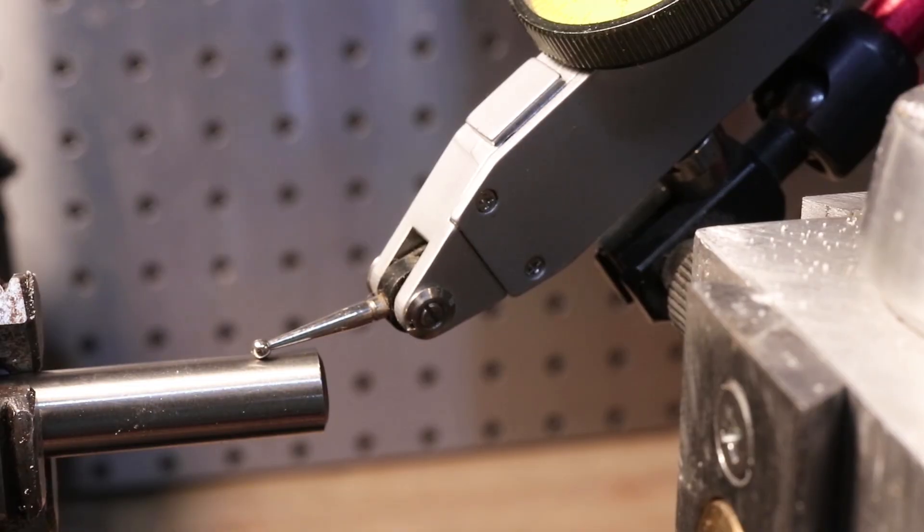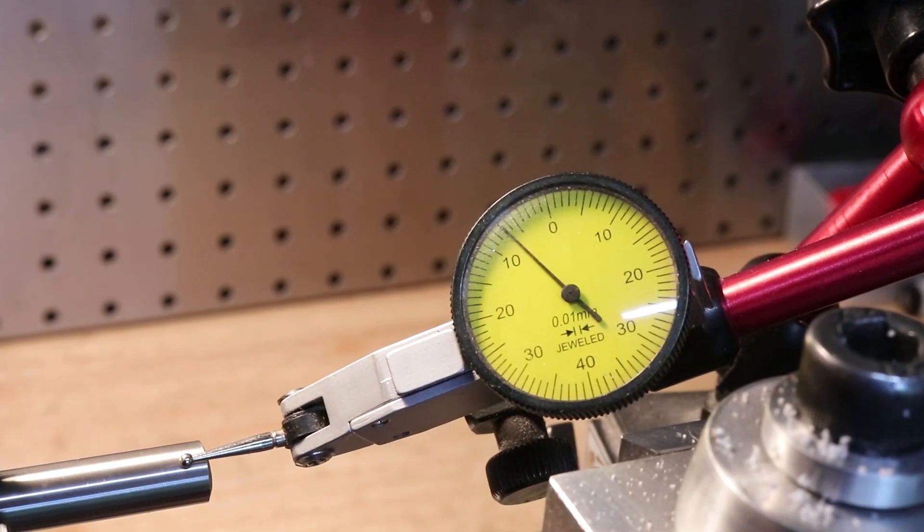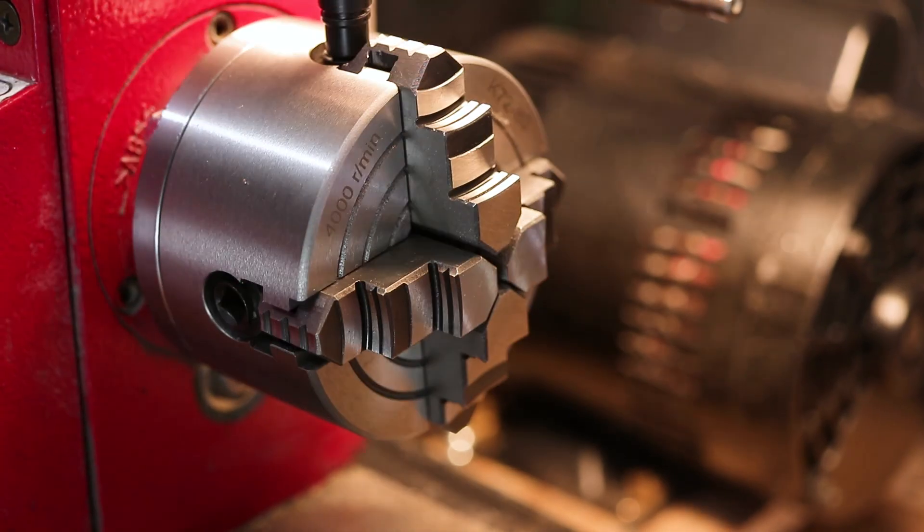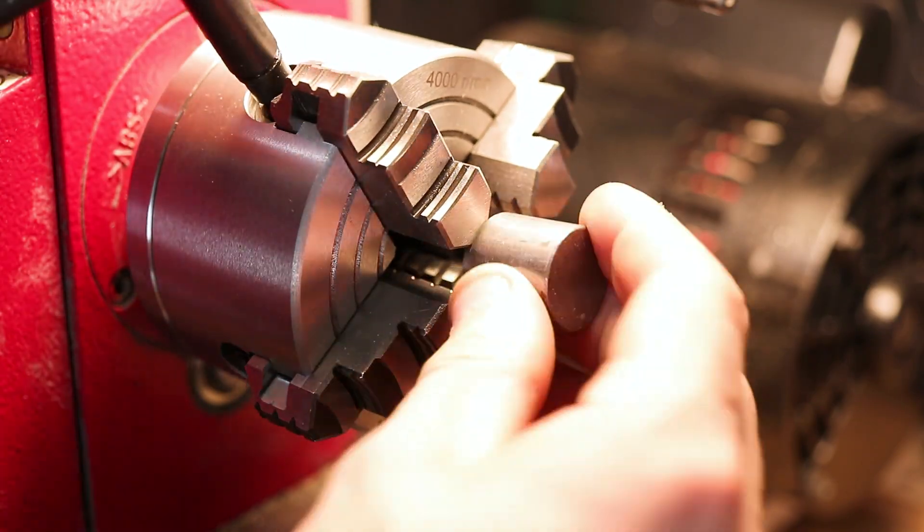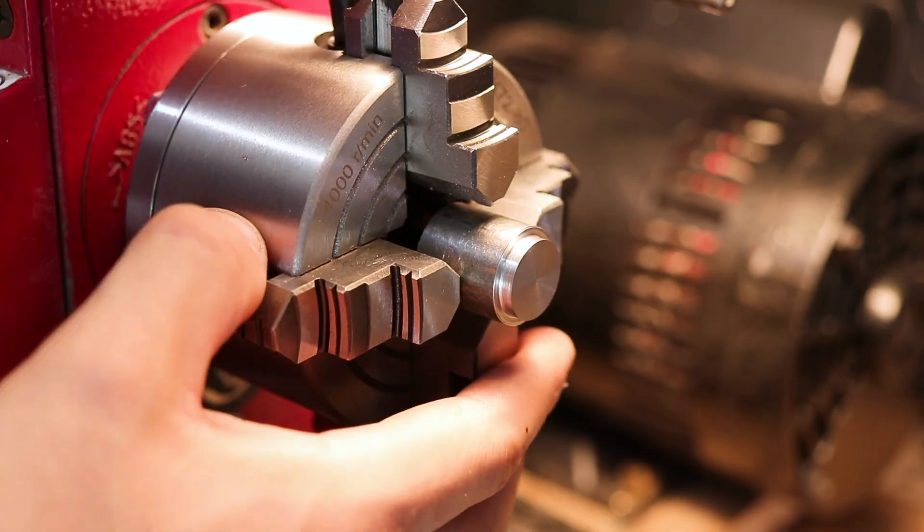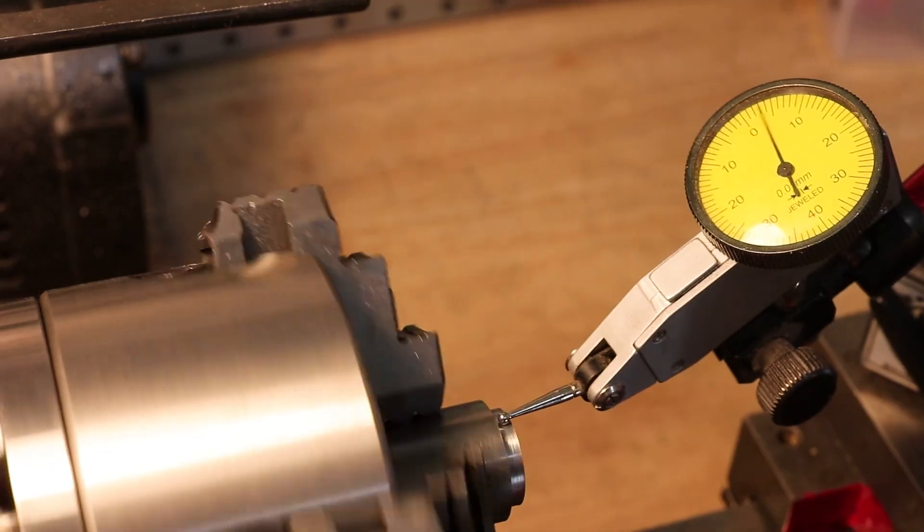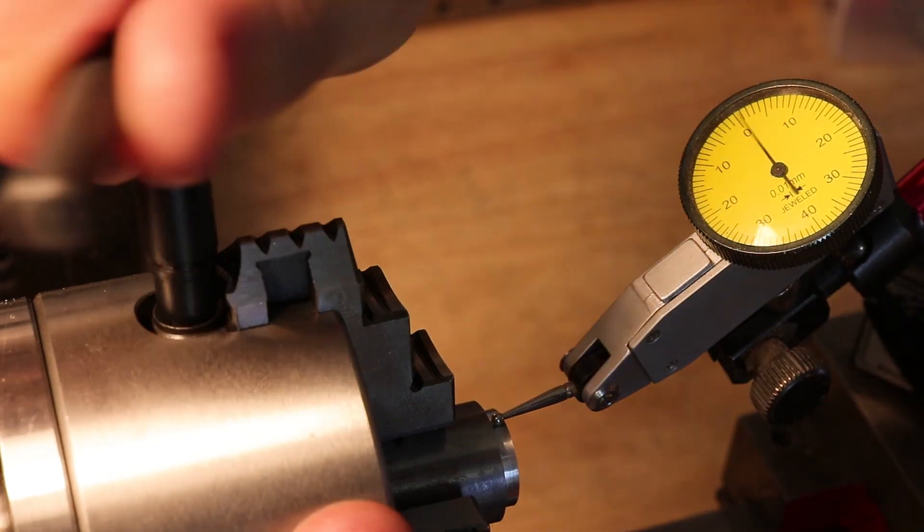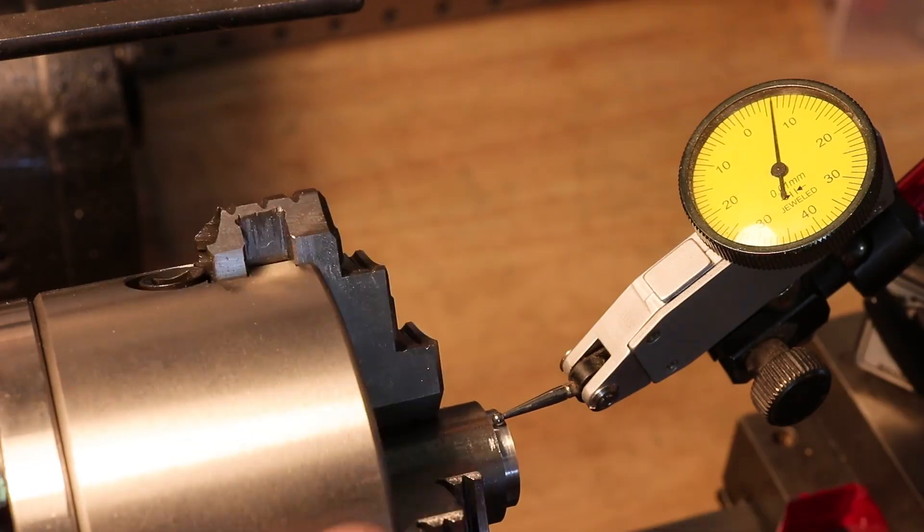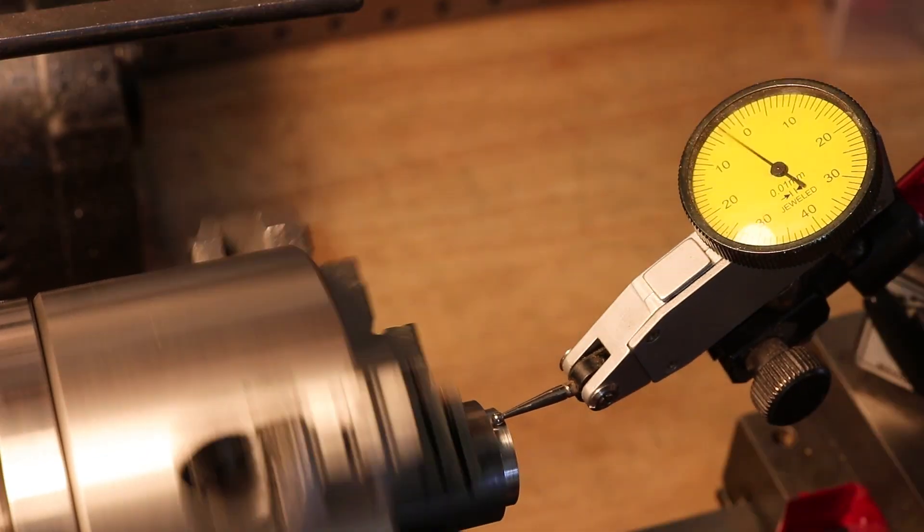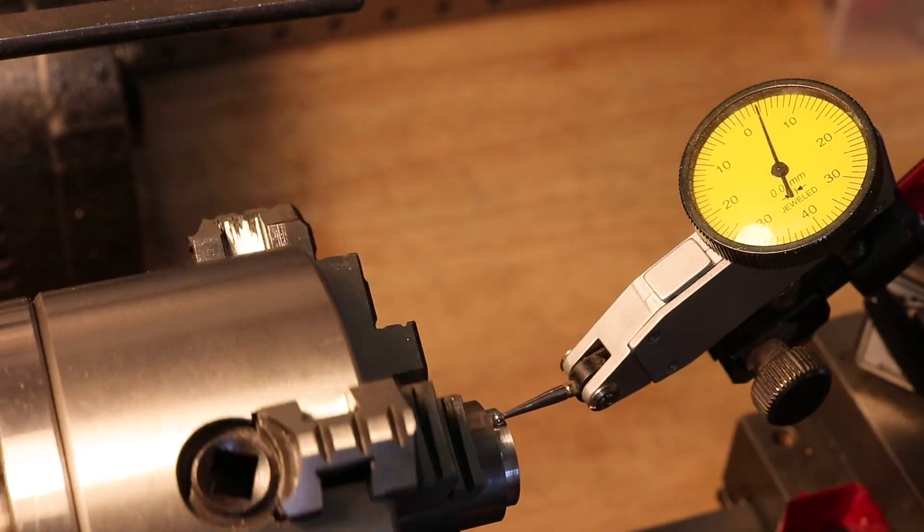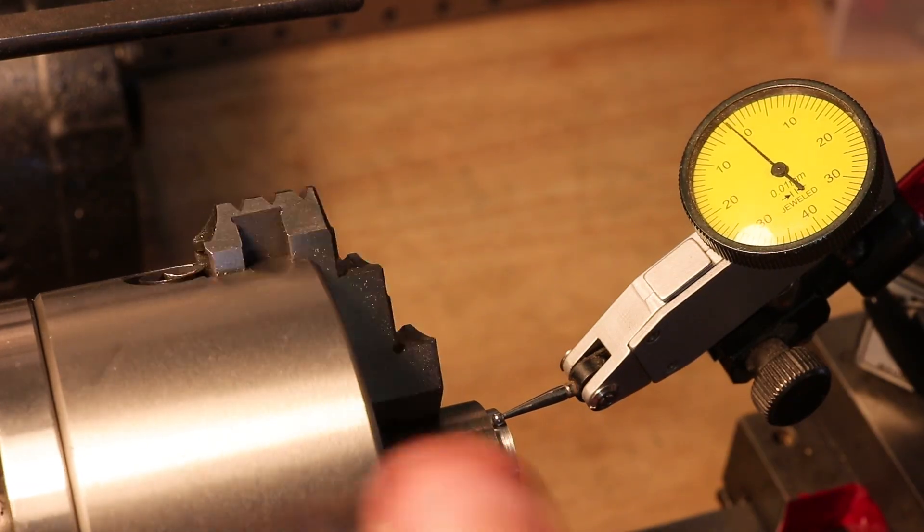On this lathe using this chuck that's going to be about 40 or 50 microns of runout. If you need your part to be running true then a four jaw independent chuck can solve this issue. You'll have to use a dial indicator to effectively dial out any runout or eccentricity and if you do it right the part will run absolutely on center. Although this can take a little bit of time to properly set up.